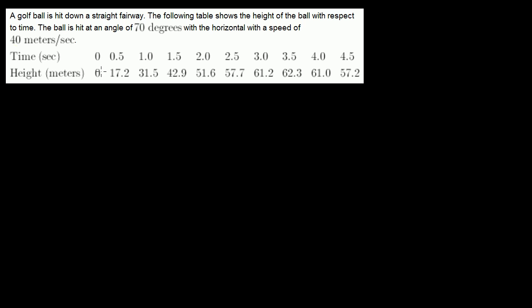And then they give us a bunch of data samples. At time 0, we're at 0 meters. At time 0.5 seconds, we're at 17.2 meters. So they give us a bunch of data points, and what I want to do is use these data points to essentially find a quadratic function that fits it best.